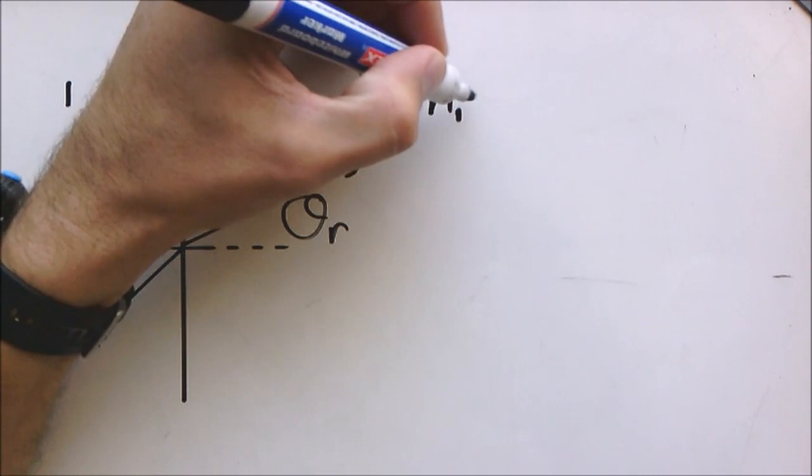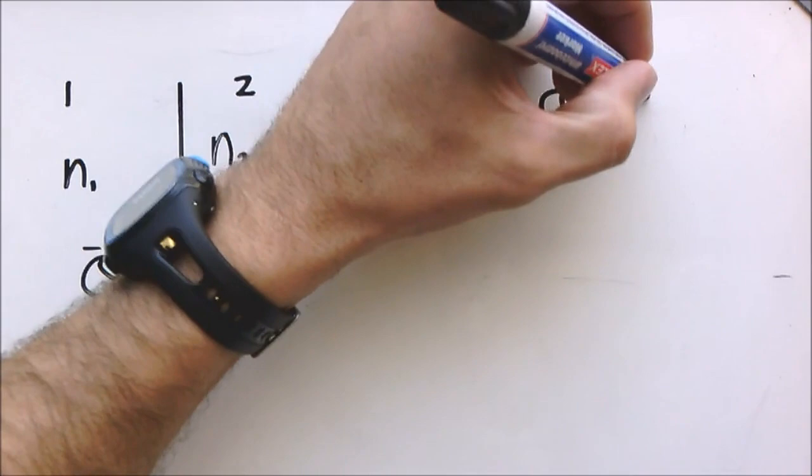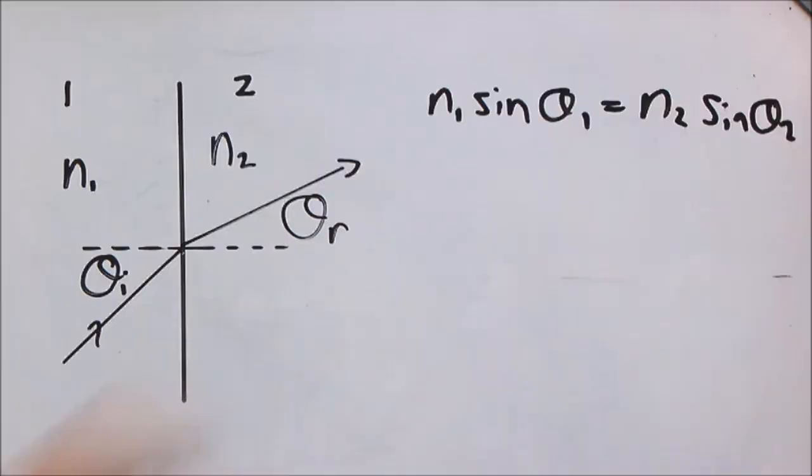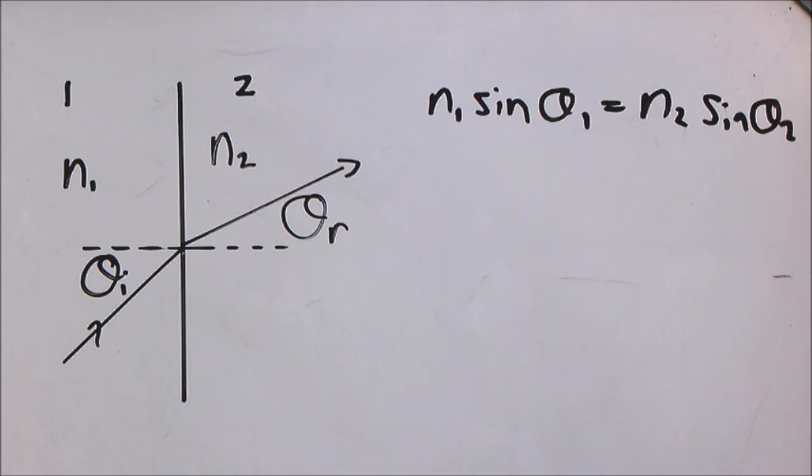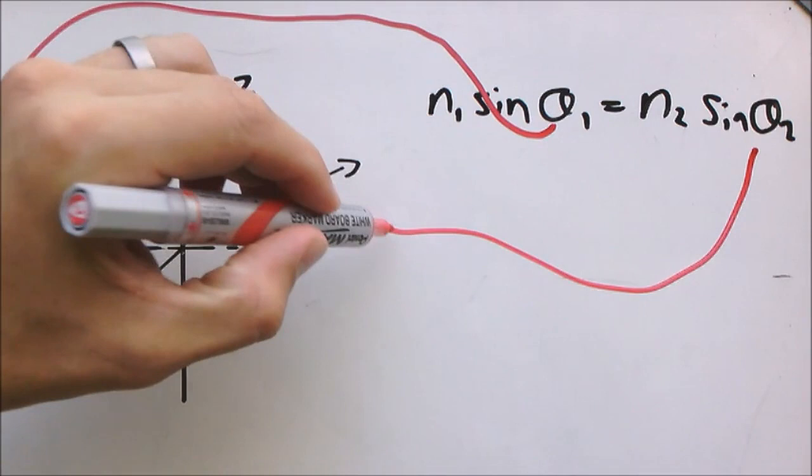Now Snell's law basically looks like this: it says N1 sine theta 1 equals N2 sine theta 2. Theta 1 corresponds with medium 1, so theta 1 will be this one, and theta 2 will be that one.